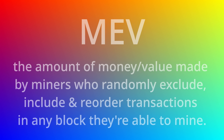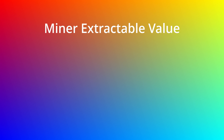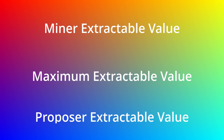MEV is a very loaded topic, so we'll just cover the high points. By definition, MEV is essentially the amount of money or value made by miners who randomly exclude, include, and reorder transactions in any block that they're able to mine. MEV used to be referred to as miner extractable value, but it is now referred to as maximum extractable value, or even proposer extractable value for proof-of-stake blockchains.